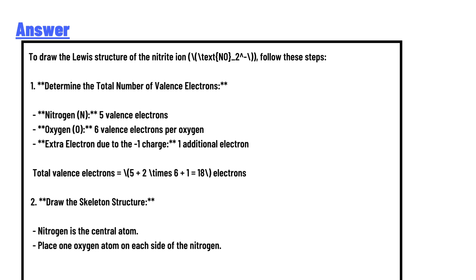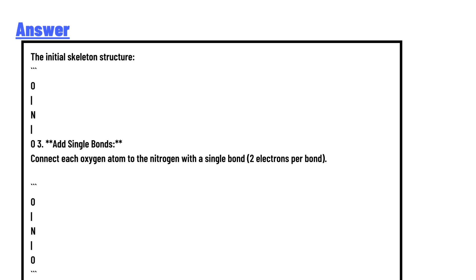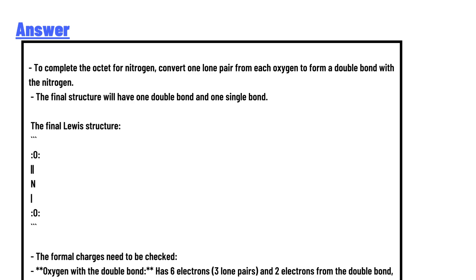For the final structure, the formal charges need to be checked. Oxygen with the double bond has six electrons, three lone pairs and two electrons from the double bond, giving a formal charge of zero. Oxygen with a single bond has six electrons, three lone pairs and one electron from the bond, resulting in a formal charge of -1. Nitrogen has four electrons from the bonds and one lone pair, resulting in a formal charge of +1.